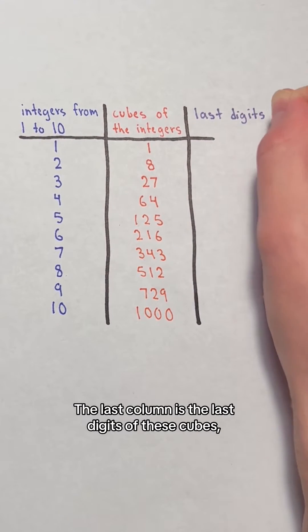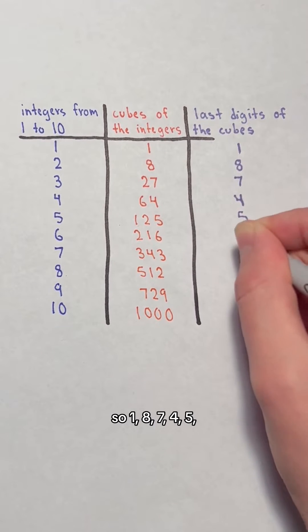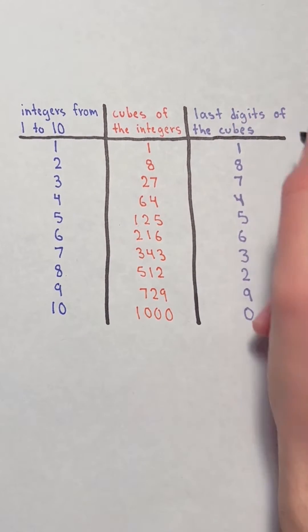The last column is the last digits of these cubes: 1, 8, 7, 4, 5, 6, 3, 2, 9, and 0.